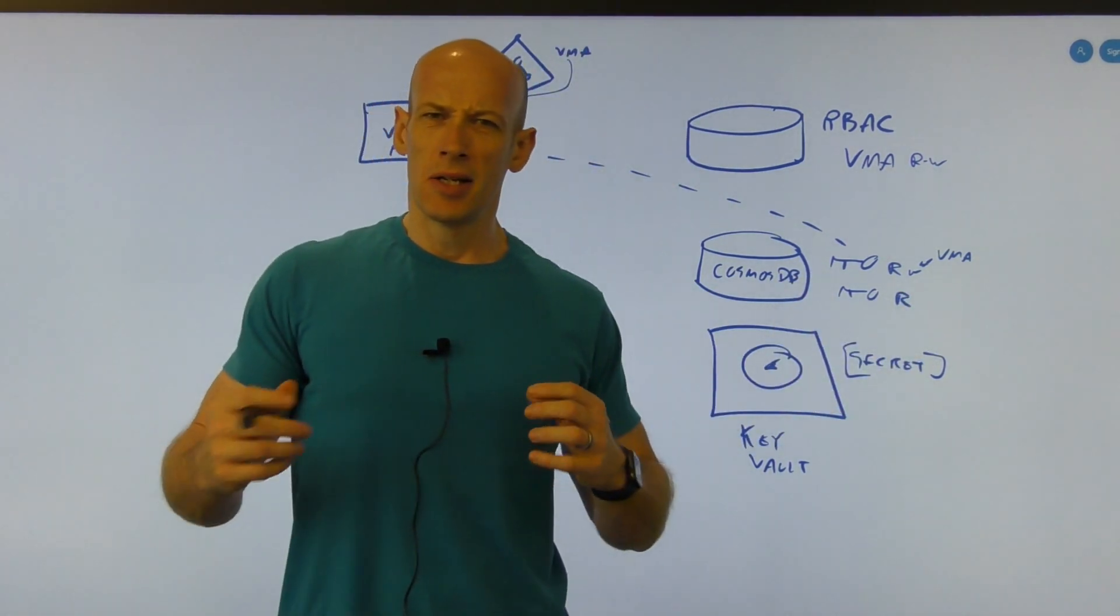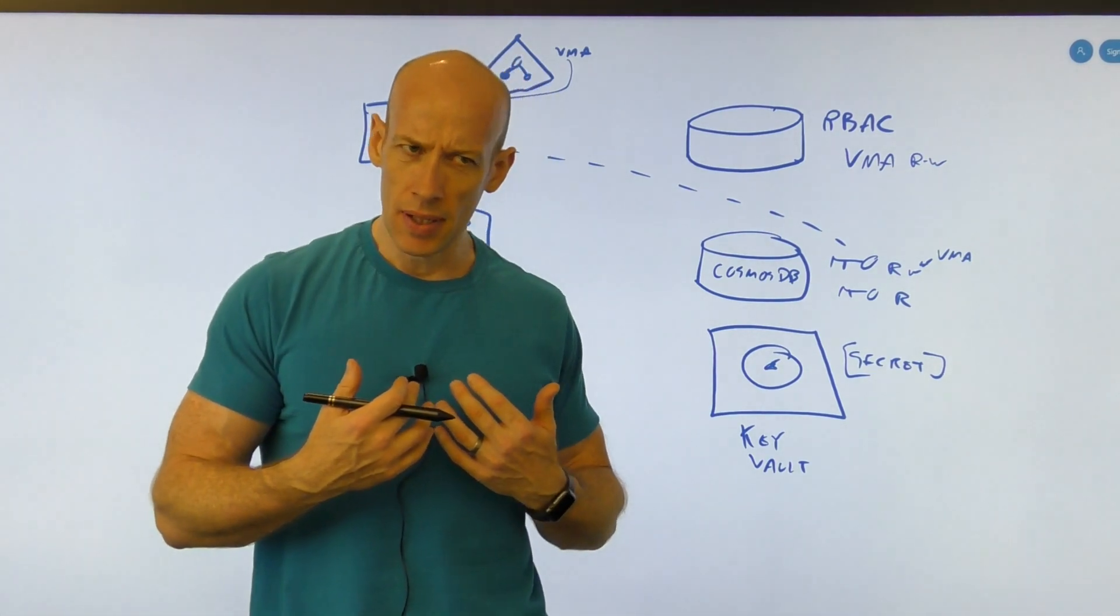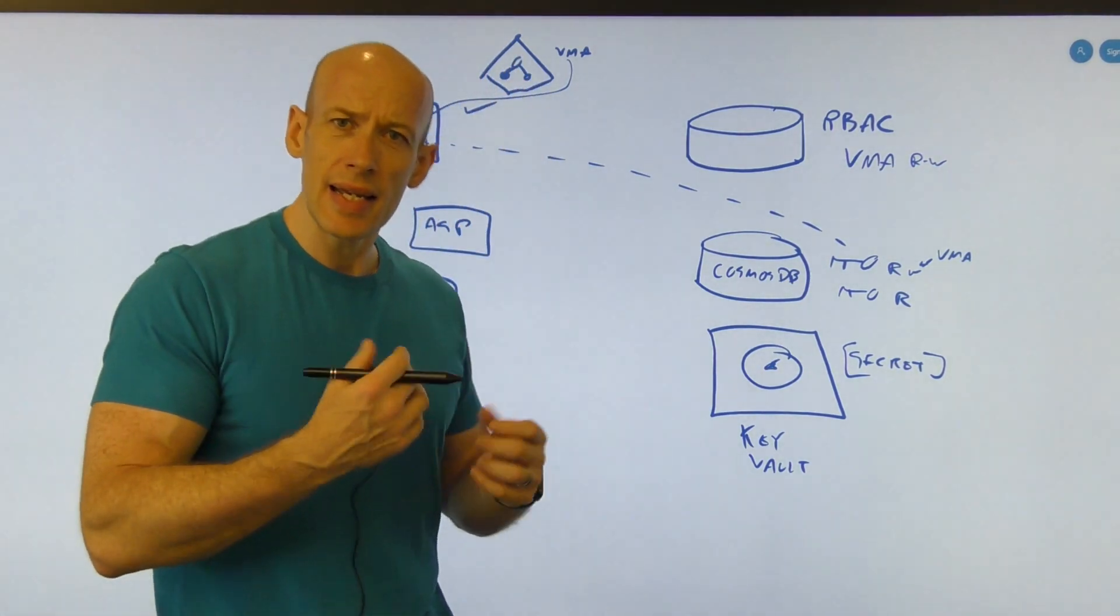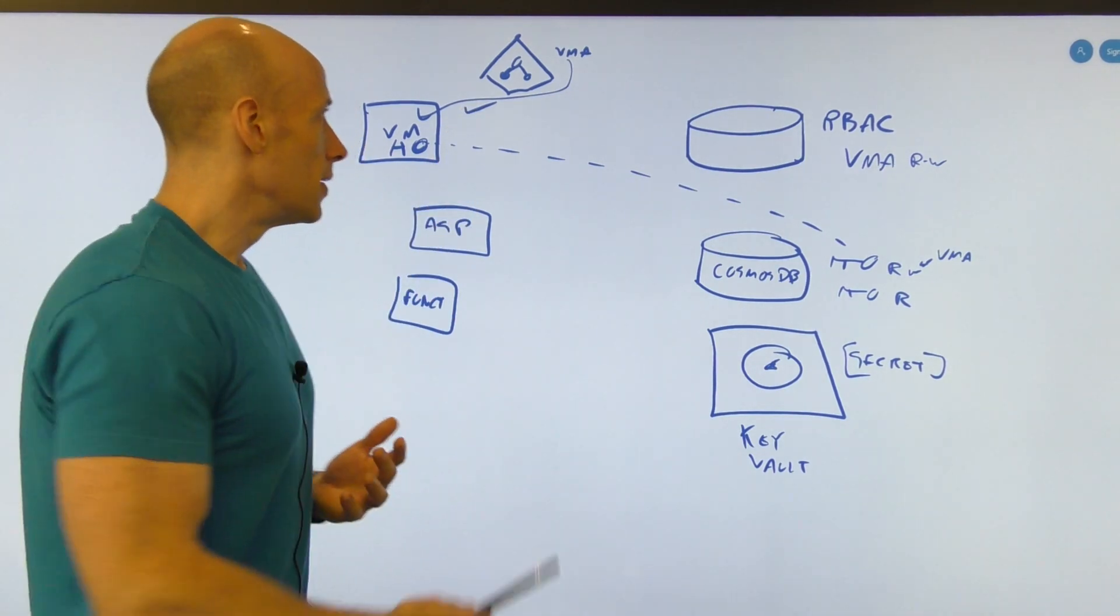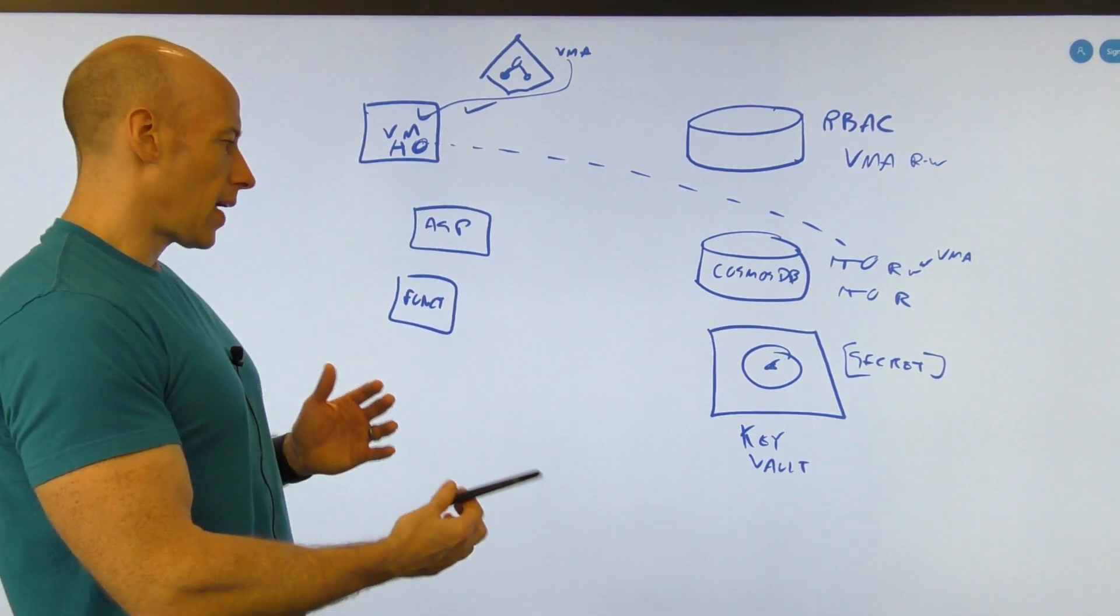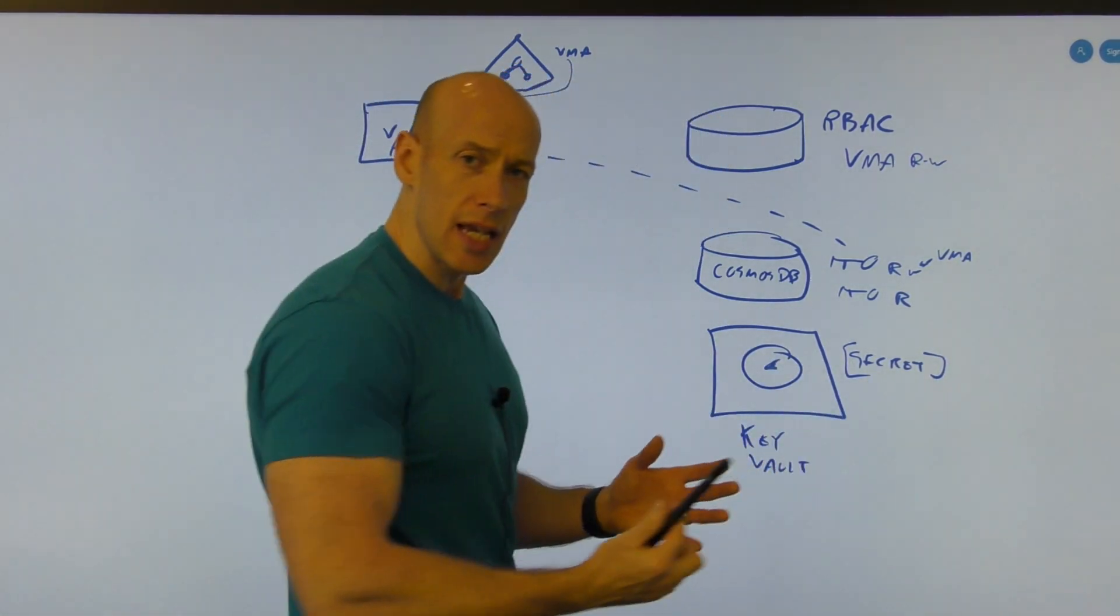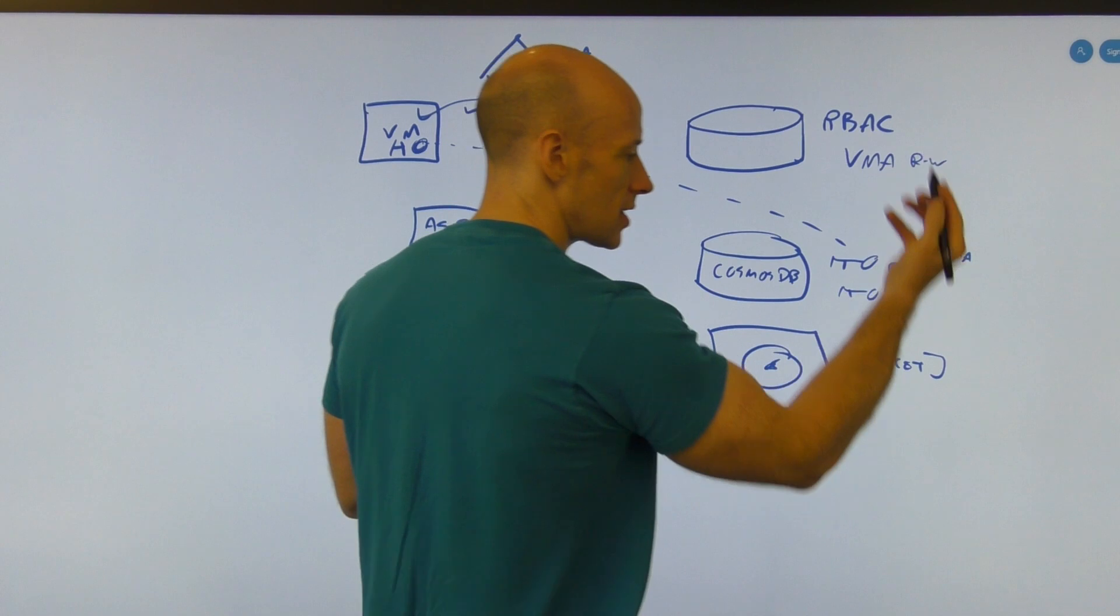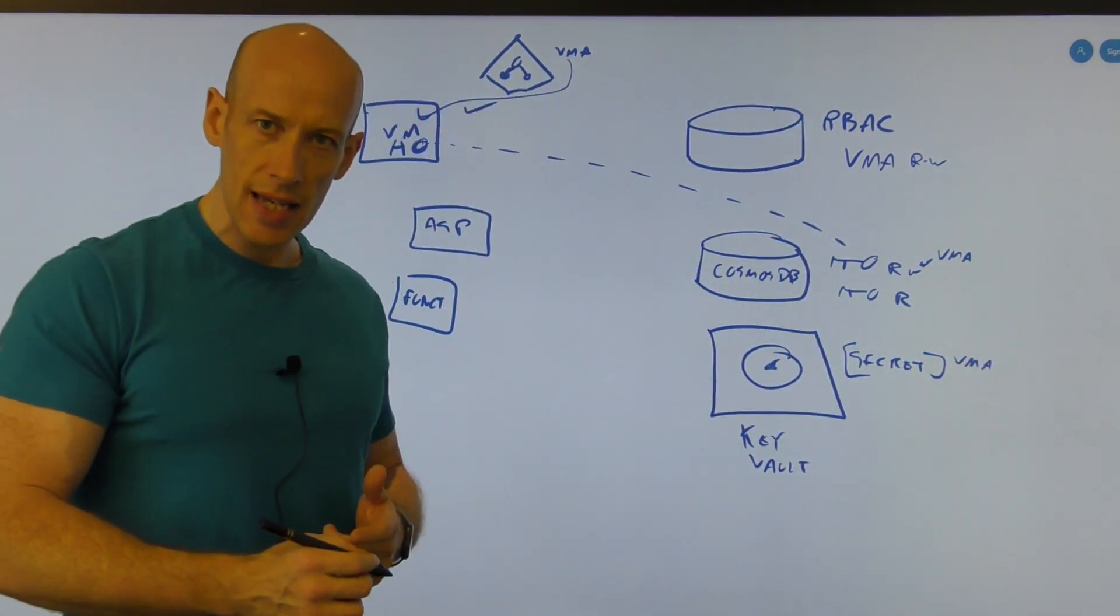But the problem is, it's a chicken and egg. How do I prove to Key Vault I am who I say I am if I don't have a secret yet? I need something. Well, managed identity, once again, can come in here. Maybe I've got my app service plan, my function, whatever. But once again, the actual on this secret, the permission to use it, in this case, we'll take the VM, well, VMA is allowed to access that secret.